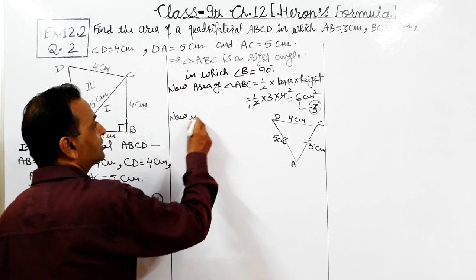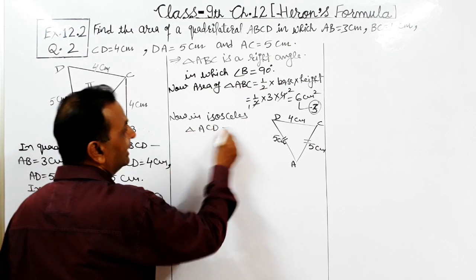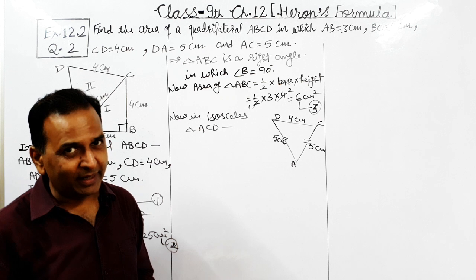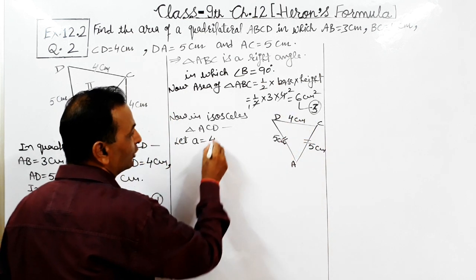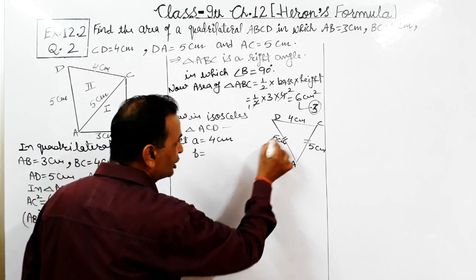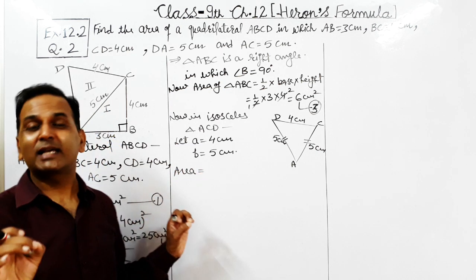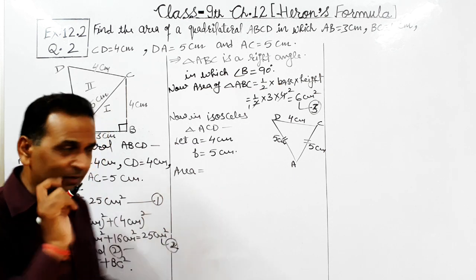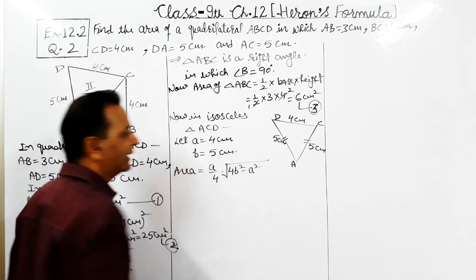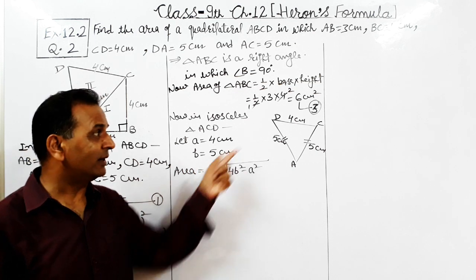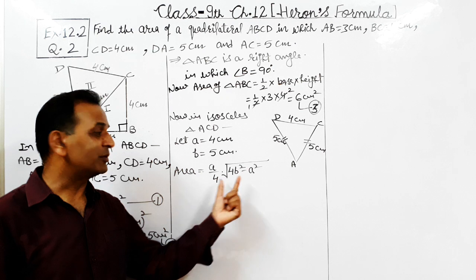In isosceles triangle ACD, let A equal the base — the single unequal side — which equals 4 centimeters, and B equal the length of each equal side, which equals 5 centimeters. So the area of an isosceles triangle using the specific formula equals A by 4 into under the root of 4B square minus A square.